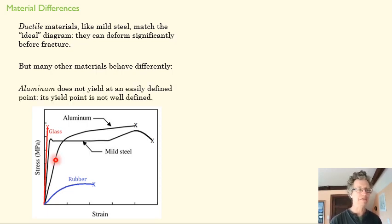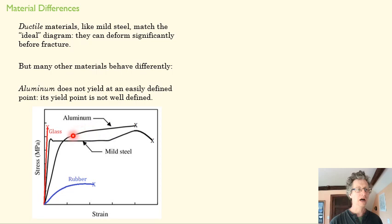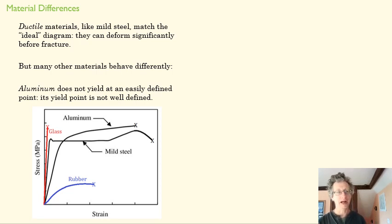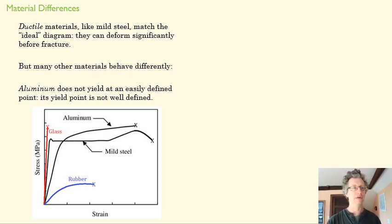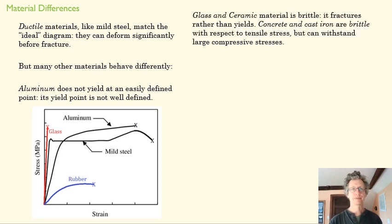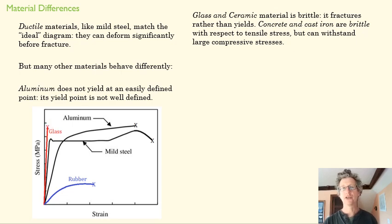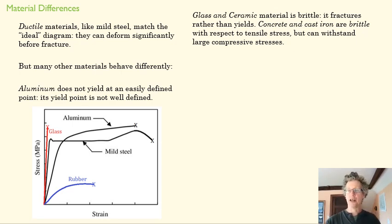Aluminum doesn't have a defined yield point. We move from an elastic region into strain hardening, but there's not a clear transition point — is it happening here, or here, or here? We have other tools, not covered in this class, to define a yield point for something like aluminum. Glass and ceramics are really brittle — when they get past the elastic region, they just break. That's what ductility means: it can have some plastic deformation without fracturing. Glass and ceramics have very little plastic deformation before completely fracturing.